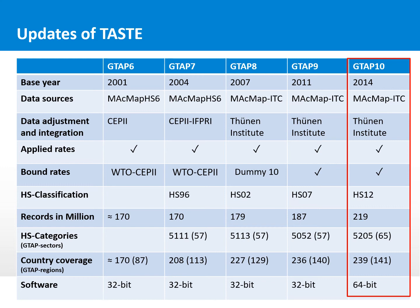The last version of TASTE was done for the GTAP 10 database with the base year 2014. The data source is the MacMaps ITC database, and it includes applied tariff rates — both preferential and MFN rates — as well as bound tariff rates. It is based on 219 million records. Because of this volume, the software was changed from a 32-bit to a 64-bit version. In total, there are 4,205 HS categories, which can be aggregated to 65 GTAP sectors according to the GTAP 10 database.